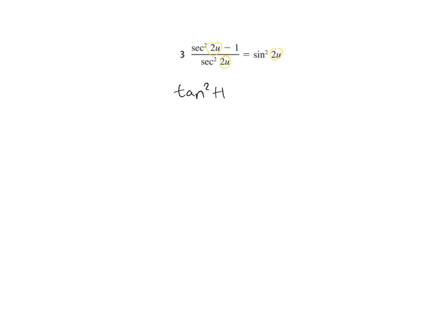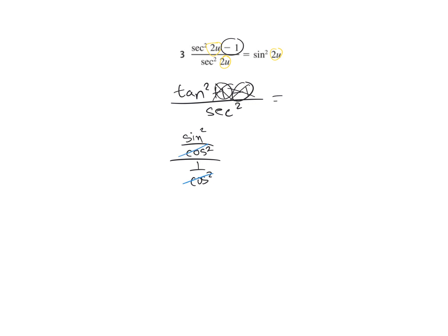We're going to change secant squared to tangent squared plus 1, and then we have the minus 1 on top with it, and secant squared on the bottom. The 1s cancel out, leaving tangent squared over secant squared. Tangent squared is sine squared over cosine squared, all over secant squared which is 1 over cosine squared. Since the denominators are the same, they reduce, leaving sine squared of the same angle.